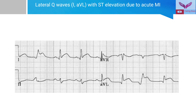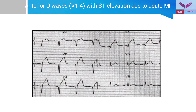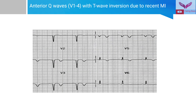This ECG shows lateral Q-waves, meaning Q-waves in lead 1 and AVL with ST elevation due to acute MI. Here again we can see Q-waves in V1 to V4 with ST elevation due to acute MI, and Q-waves in chest leads V1 to V4 with T-wave inversion due to recent MI.